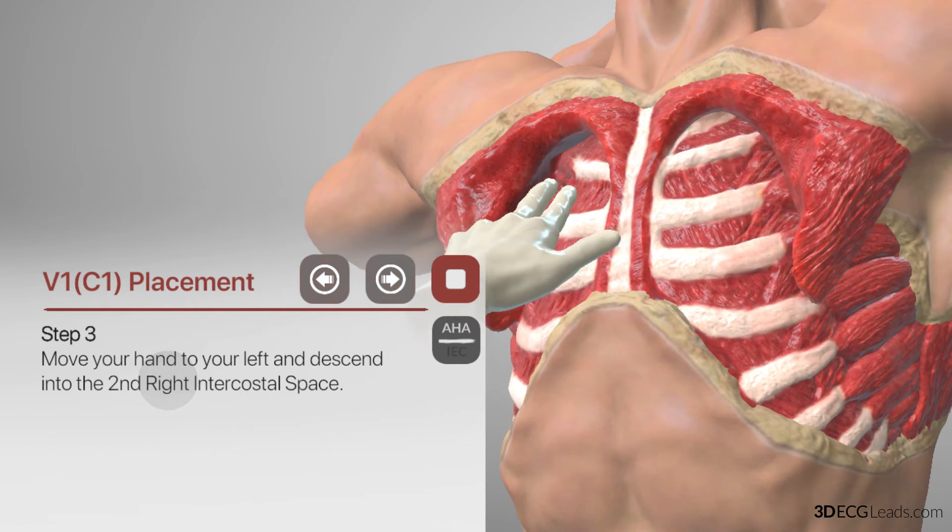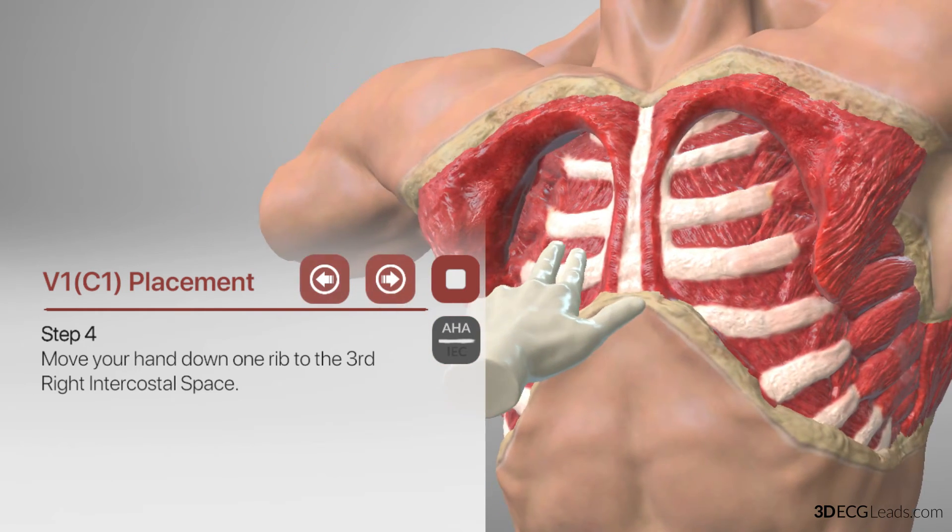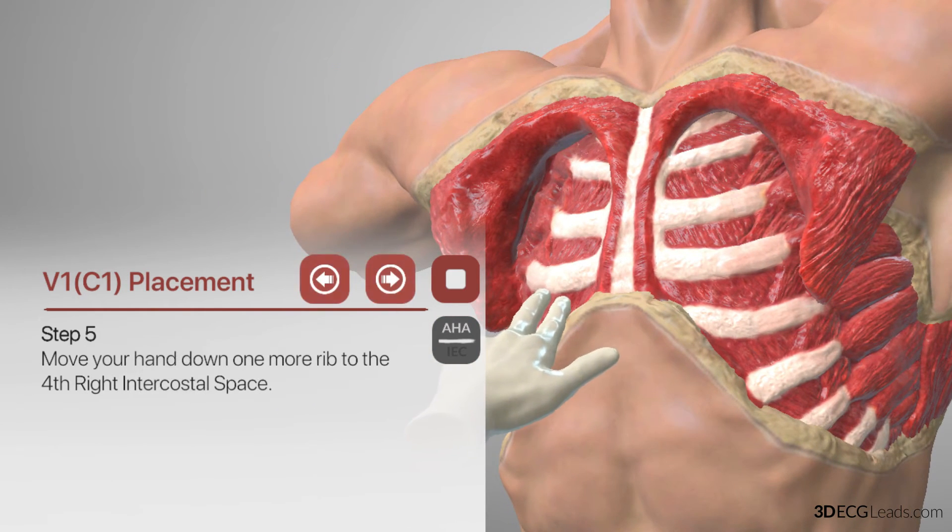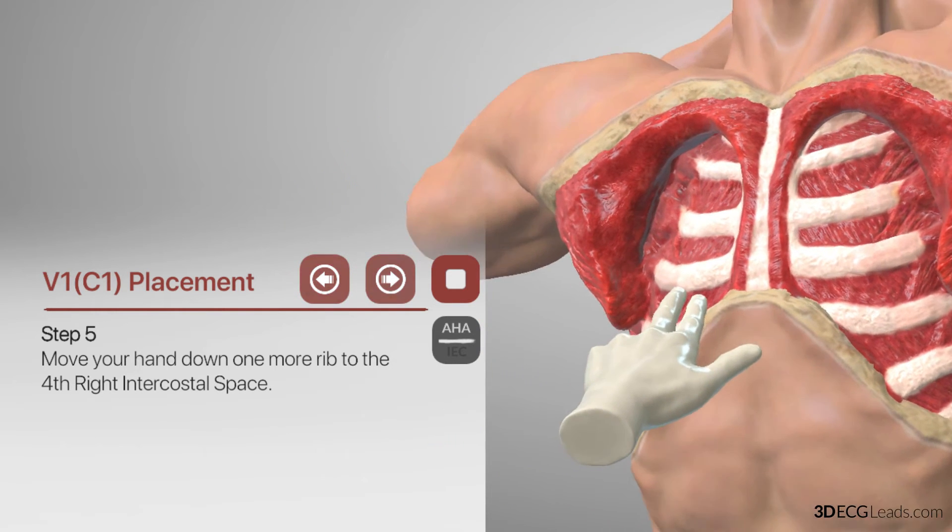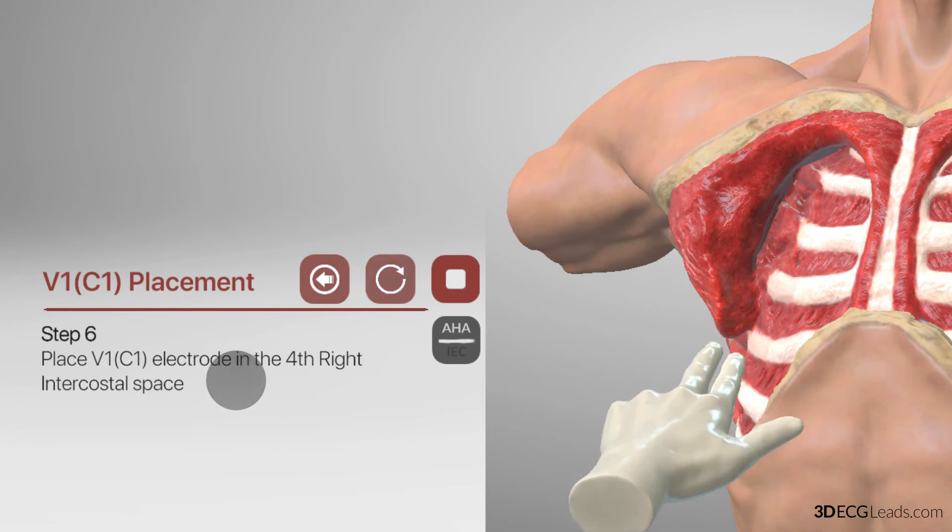From here, slide your hand down another rib to the next depression, which is the third intercostal space, and another rib into the fourth intercostal space. This fourth intercostal space is where you will place V1, on the right border of the sternum.